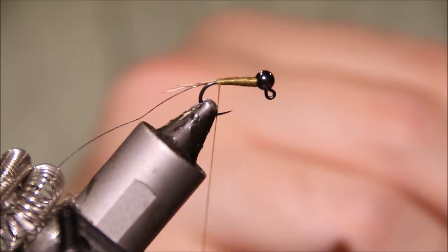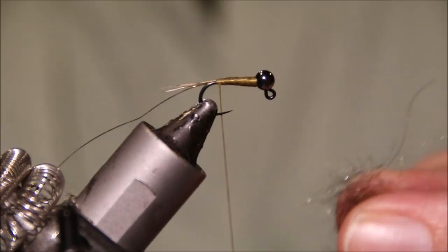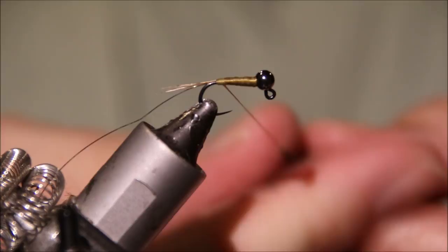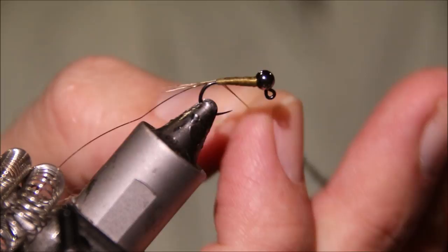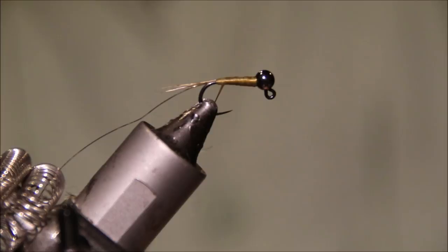So the body I'm going to use Sow-Scud dubbing. I'm using dark sow-bug. It's kind of dark olive-ish gray. It's a decent representation of quite a few darker mayfly nymphs, that kind of thing.